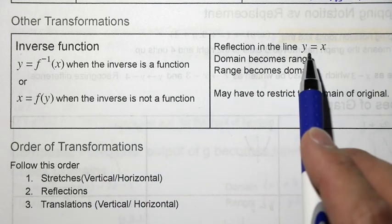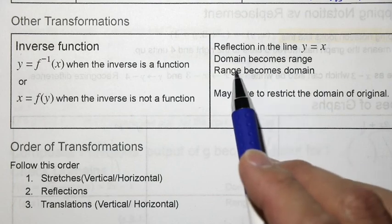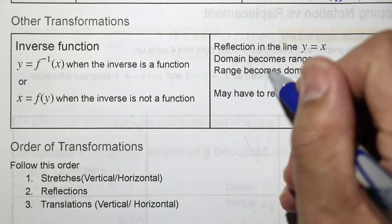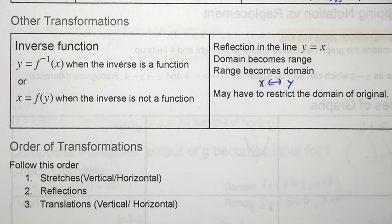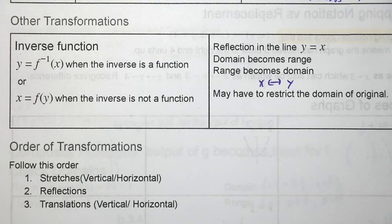For an inverse, it's a reflection in the line y equals x. The domain, of course, becomes a range. The range becomes the domain. Remember from last unit that you're going to interchange x and y coordinates. So you can see that from a graph. You can take specific coordinates to make the inverse. You can switch the x and y coordinates in the ordered pair.